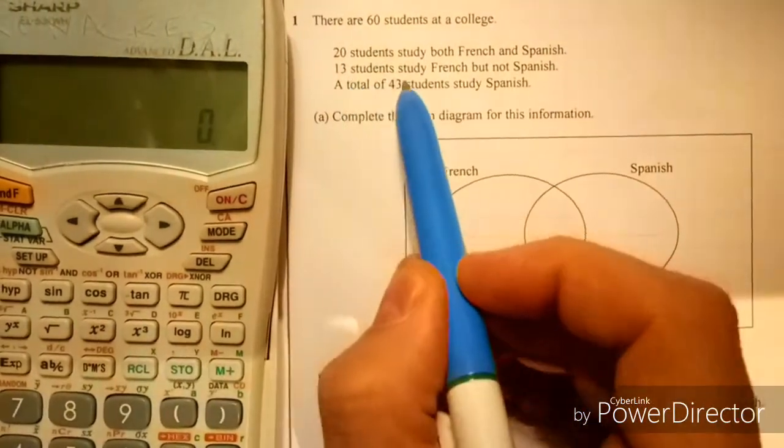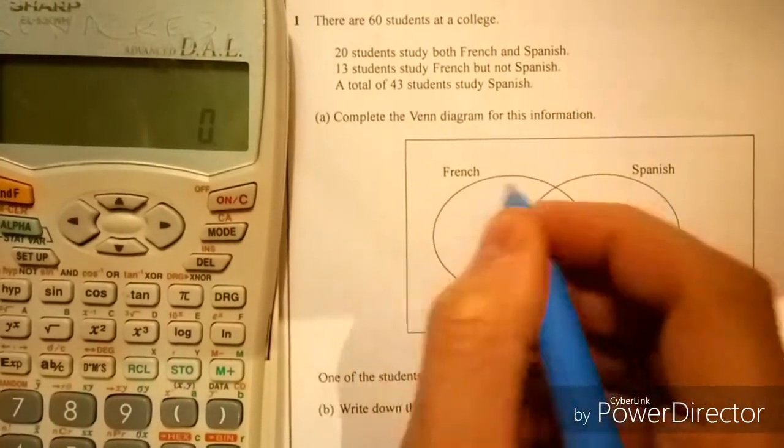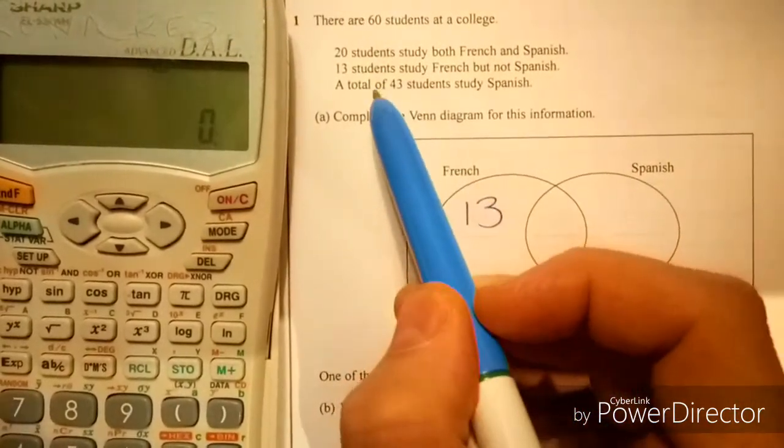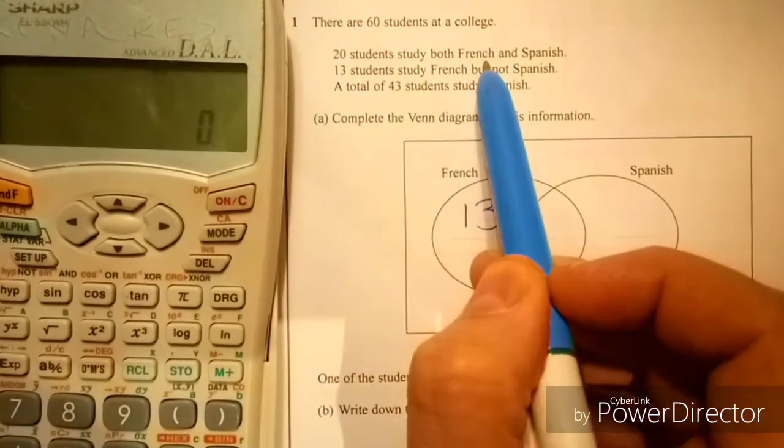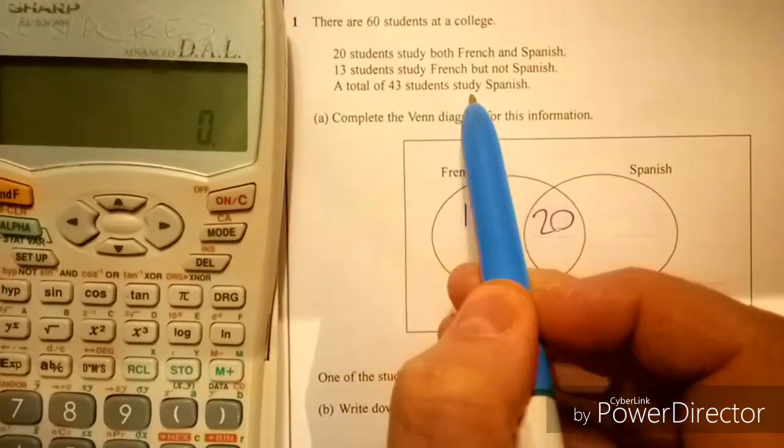13 students study French but not Spanish. That's this bit here, it's going to have to be 13. 20 students study both French and Spanish, which is your middle bit. And the total 43 students study Spanish.